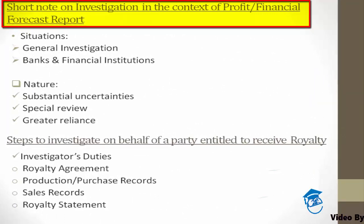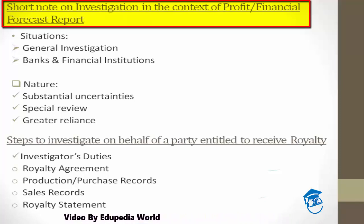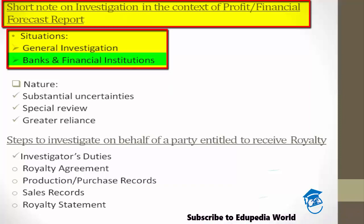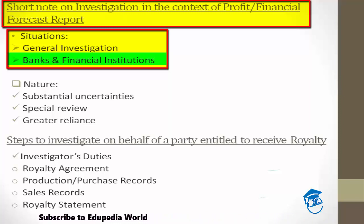First, think about situations — before anything else, you need to analyze why and under what situations profit and financial forecast reports can be required. Number one: general investigation — some kind of general investigation is going on, including the purchase of any kind of business. Number two: by banks and financial institutions with regard to project cash flow, where the bank may be apprehensive about providing a loan, so investigation is done regarding the profitability for appraisal of the borrower's loan application.